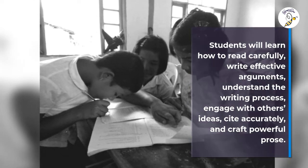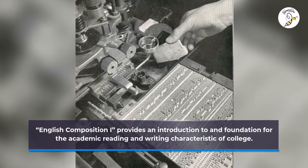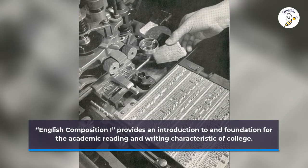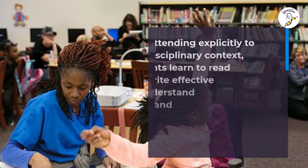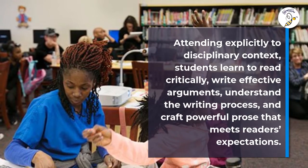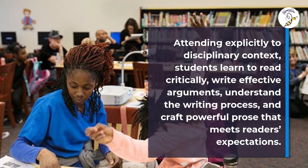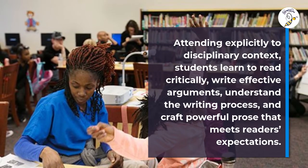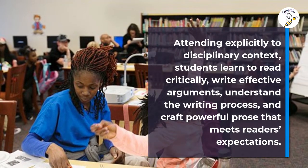Learning Outcomes — Why take this course: English Composition I provides an introduction to and foundation for the academic reading and writing characteristic of college. Attending explicitly to disciplinary context, students learn to read critically, write effective arguments, understand the writing process, and craft powerful prose that meets readers' expectations.